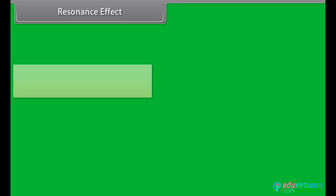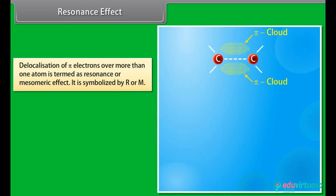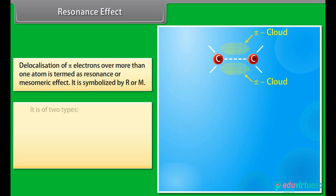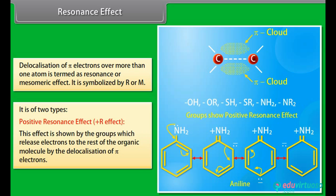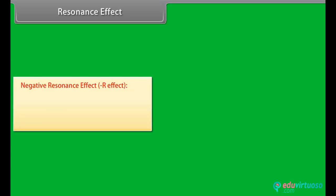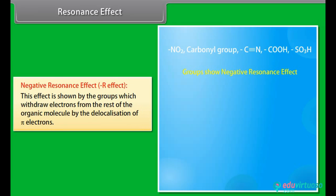Delocalization of pi-electrons over more than one atom is termed the resonance or mesomeric effect, symbolized by R or M. It is of two types. The positive resonance effect (+R effect) is shown by groups which release electrons to the rest of the organic molecule by delocalization — for example, aniline. The negative resonance effect (−R effect) is shown by groups which withdraw electrons from the rest of the organic molecule by delocalization — for example, nitrobenzene.